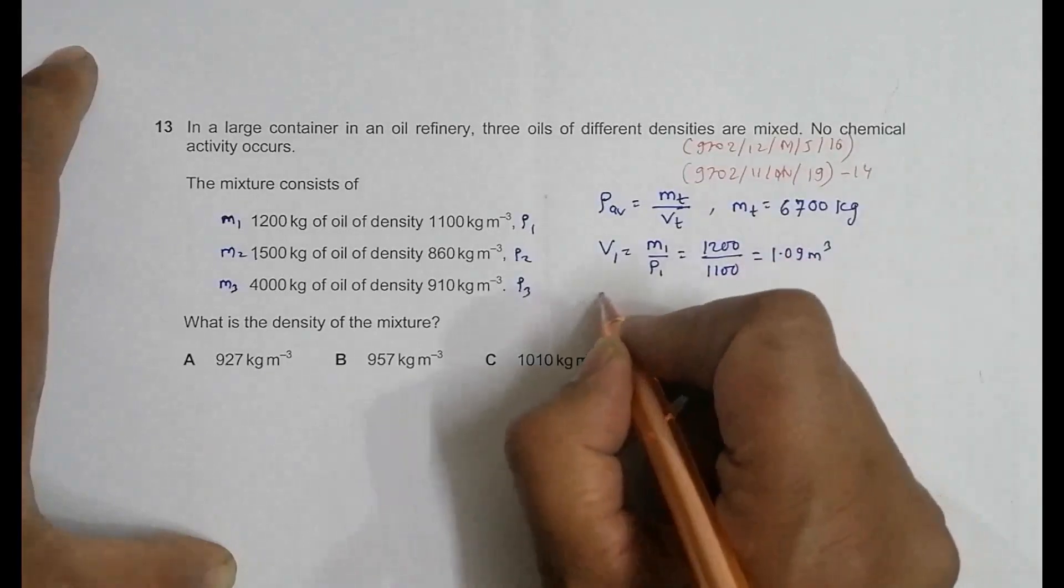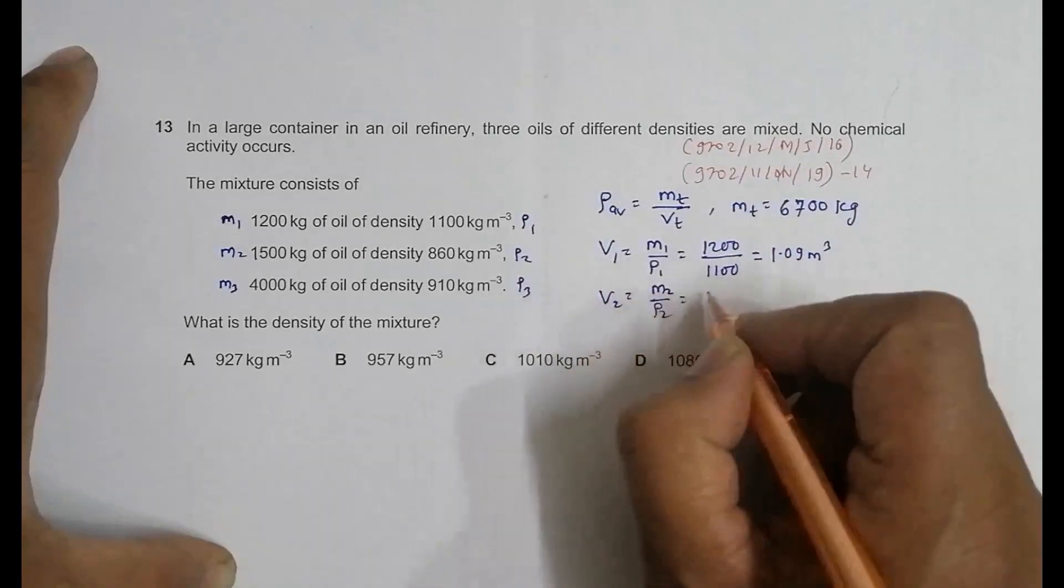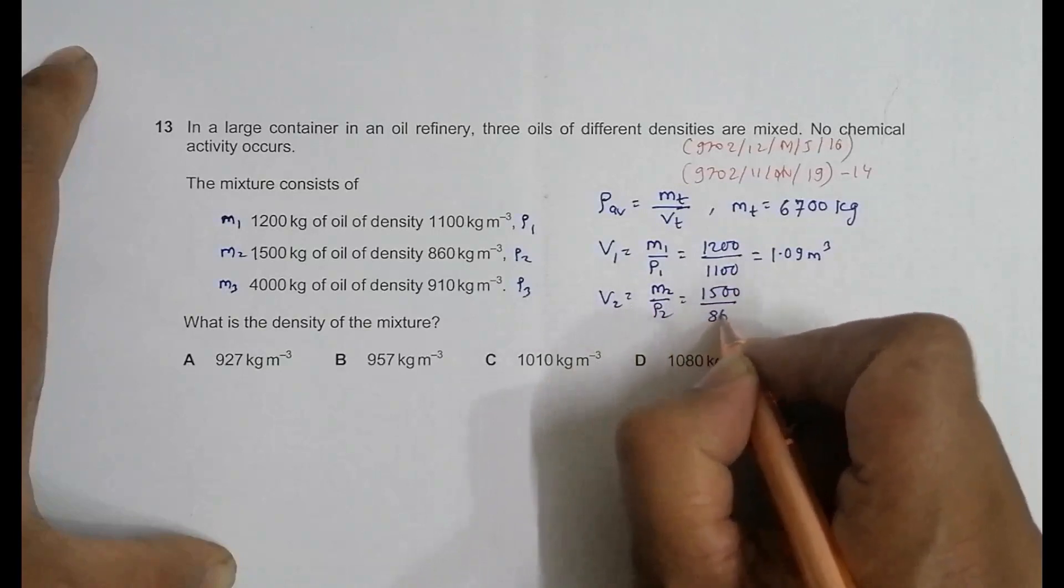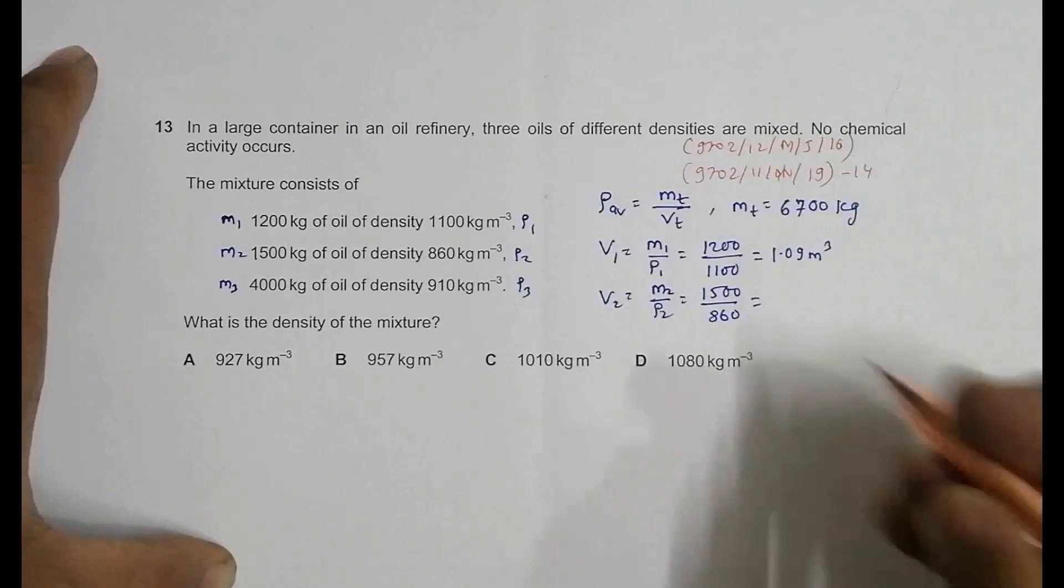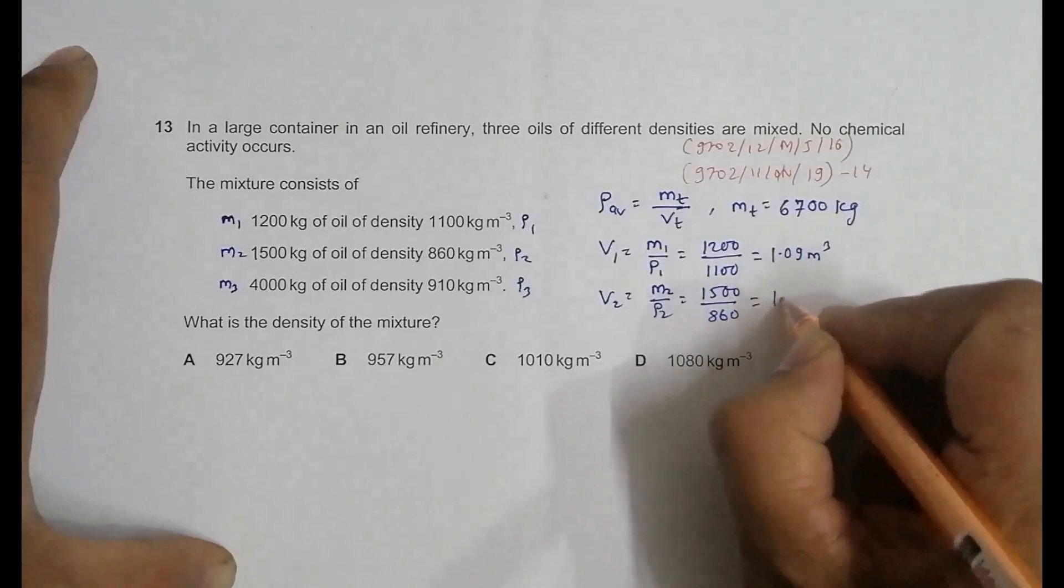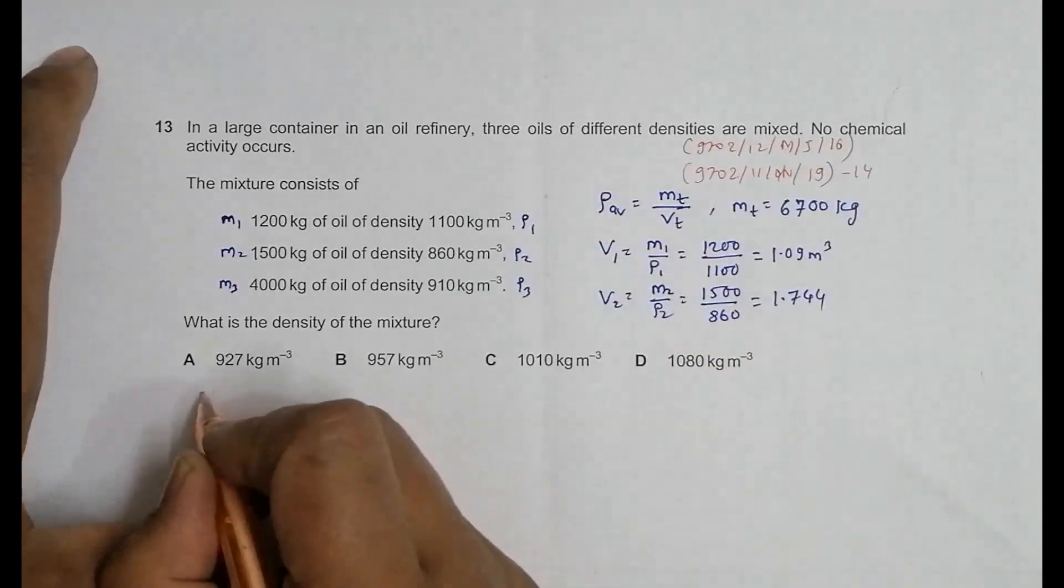V2 is equal to m2 by ρ2, that's equal to 1500 divided by 860, which equals 1.744 meter cubed.